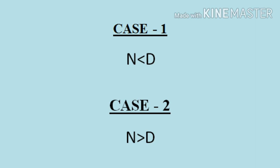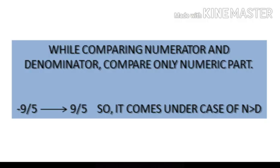First, where the numerator is smaller than denominator and second, where the numerator is greater than the denominator. Note, we will only do comparison on the basis of numerical value. For example, if we are given a number minus 9 upon 5, it will be considered 9 upon 5 and not minus 9 upon 5. So it will come in the category of numerator greater than the denominator.